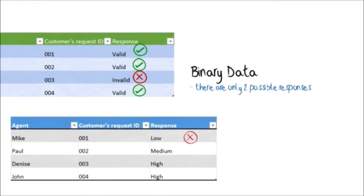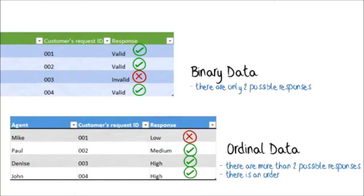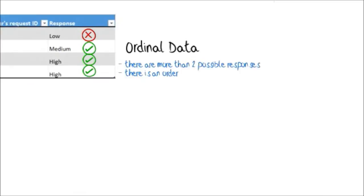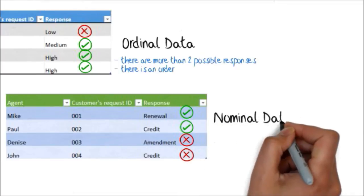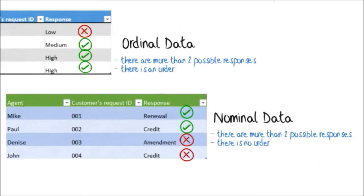If you want to evaluate how well the agents classify the complexity of the request received from the customer, you will have to assess ordinal data because there are more than two possible responses and they have an order: low, medium, and high. Another example is if you want to evaluate whether the agents choose the correct taxonomy during data entry. In this situation, you will have to assess nominal data because there are more than two possible responses but there is no order.